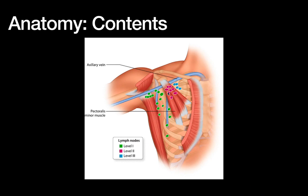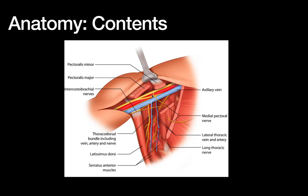If you hear the term Rotter's nodes, those are nodes on top of the pec minor but below the pec major — sandwiched in there. Technically they're level two nodes, but they're on the opposite side of the pec minor than you would expect.